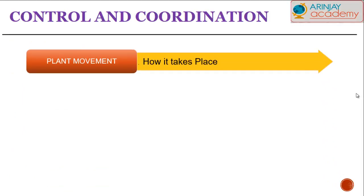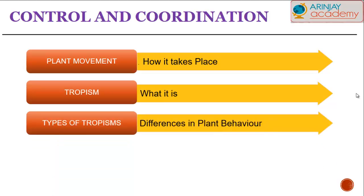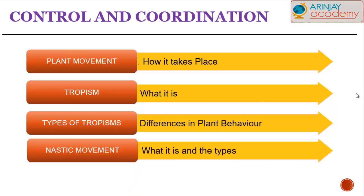Let's have a look at the various topics we intend to cover. Plant movement — how it takes place. We will be looking at what we refer to as tropism: what is tropism, what kinds of tropisms are there, how do they take place, and why are they important. And of course, what do we mean by nastic movement within plants and how or why it takes place?